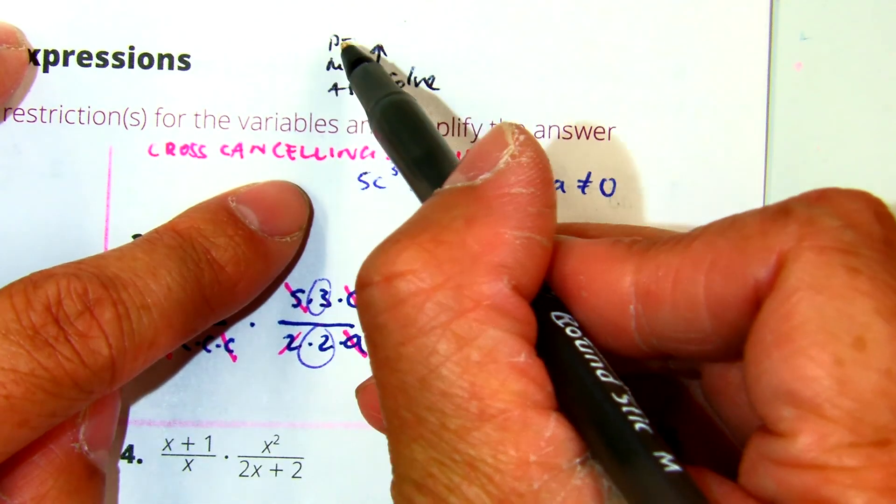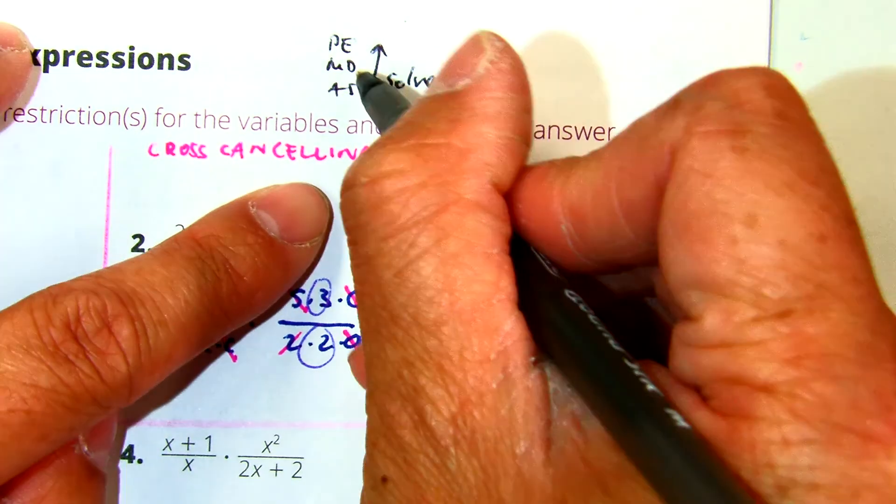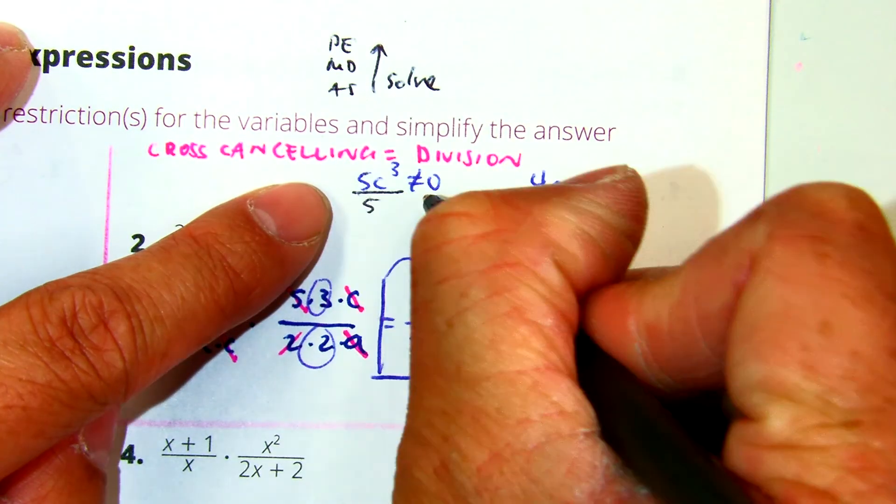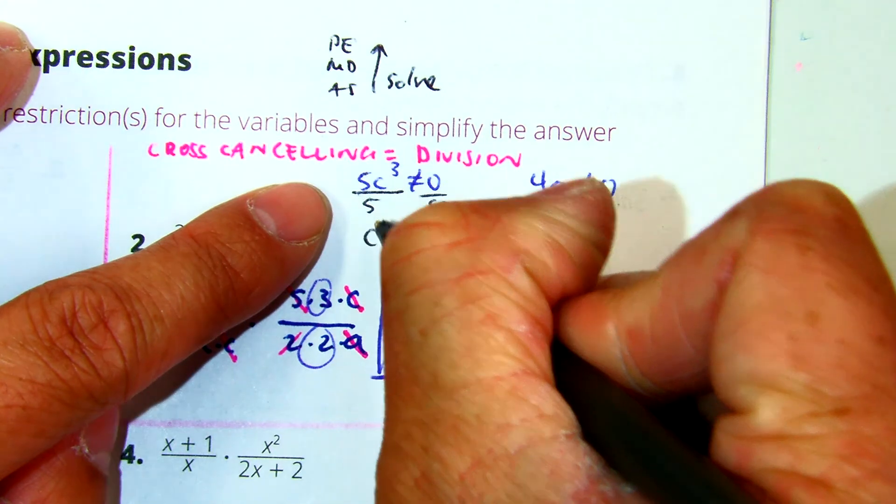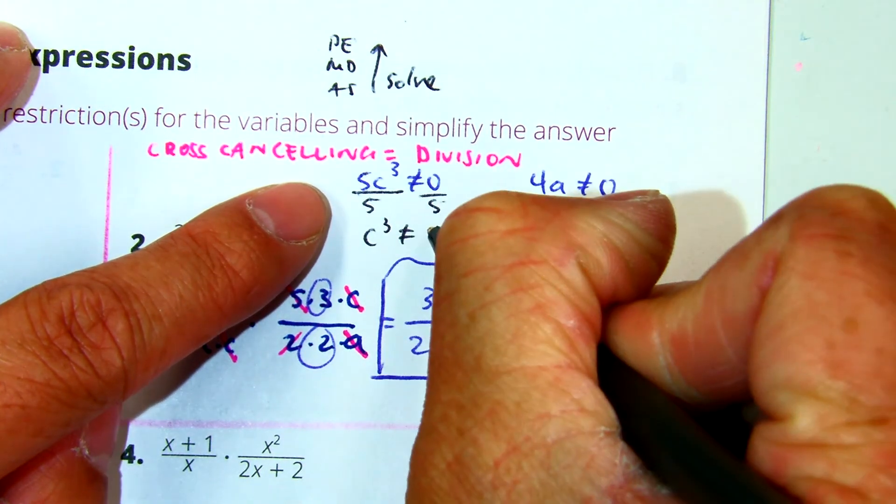Does that make sense? You're going to do multiplication first. You're going to divide by 5. C to the third power is not equal to what? 0.